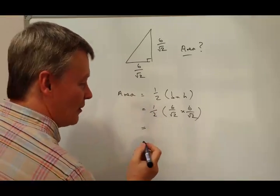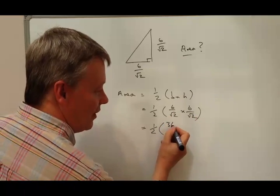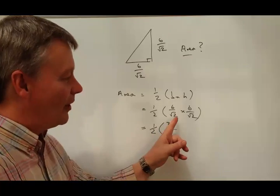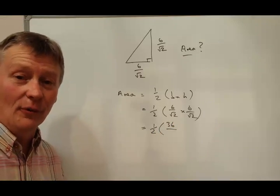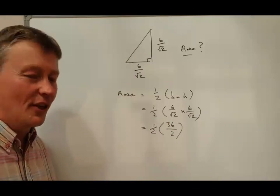Okay, so let's just plug those numbers in a little bit further. We've got a half multiplied by 6 times 6, which is 36. And at the bottom I've got root 4. Well, the square root of 4 is 2, so it's actually 36 divided by 2.